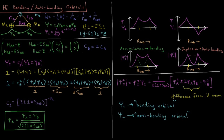We have kinetic energy for the electron, which in atomic units is minus one-half del squared acting on electron one. We have attraction of electron one to nucleus A, minus one over R1A, attraction to nucleus B, minus one over R1B, and repulsion of the nuclei from each other, plus one over RAB, which is a constant parameter input into our electronic Schrödinger equation.